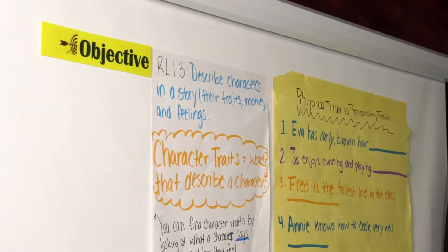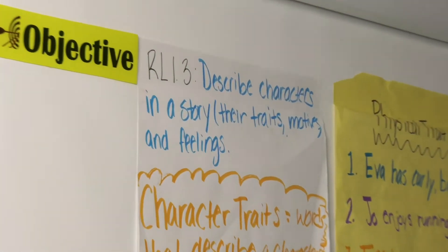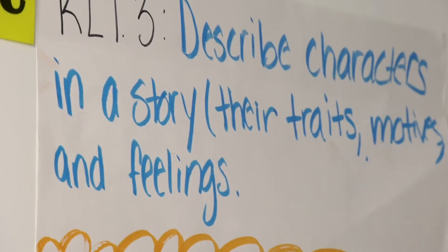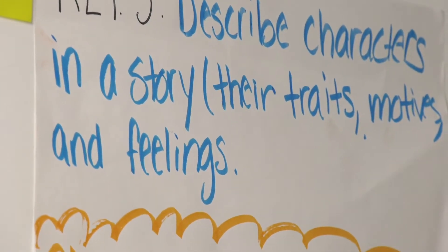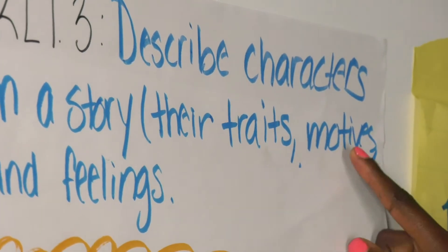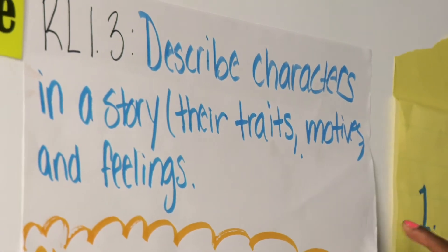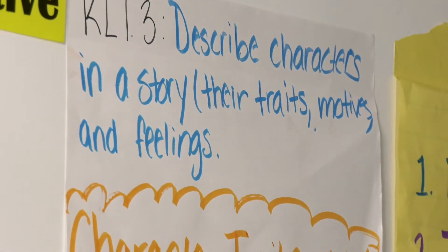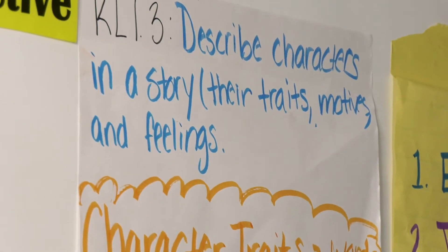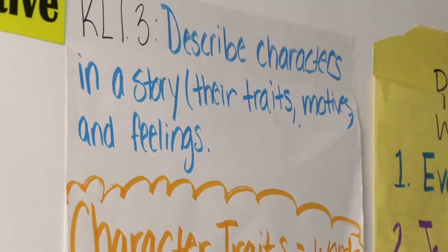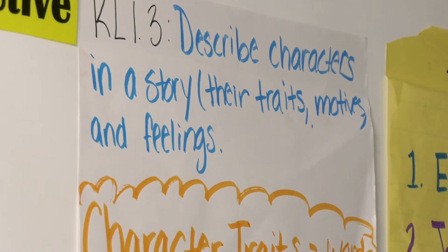We have our standard here, which is RL 1.3: describe characters in a story, their traits, motives, and feelings. Now one thing I did not go over yesterday is what motives means. Motives is what makes somebody do something. What is a motivation? Motivation is what makes you do something. And also feelings — we know what feelings are; it's something that you feel inside.